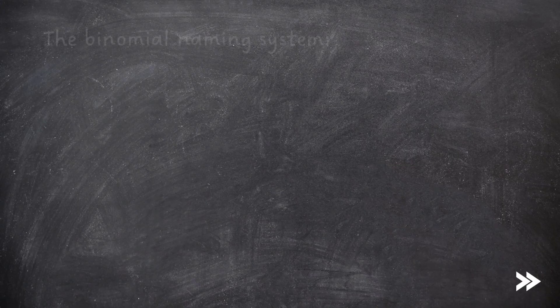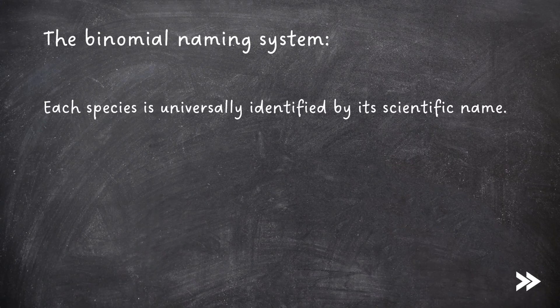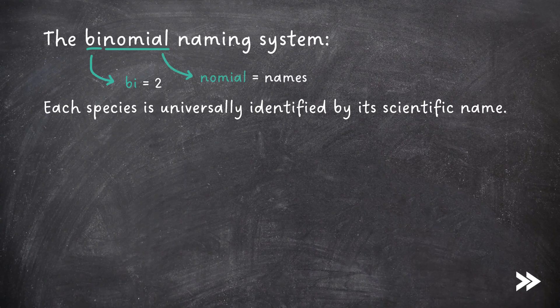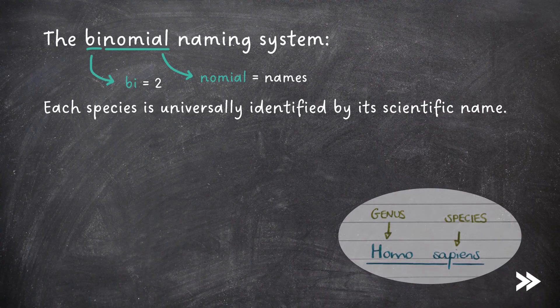Finally, we need to know about the binomial naming system. Each species is universally identified by its scientific name. 'Bi' comes from the Latin language and means two, and 'nomial' means name — so basically, two names. It's a way of identifying a particular species, and consists of two parts: first, we have the genus, followed by the species.